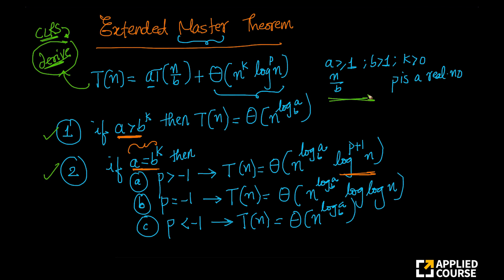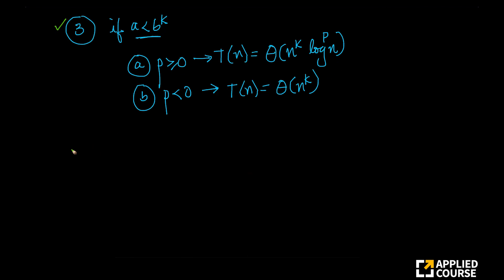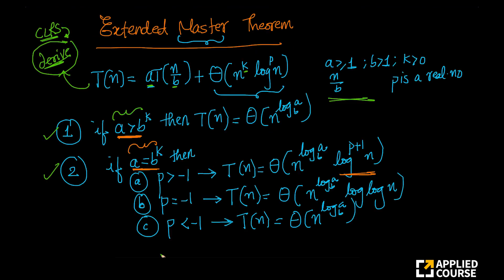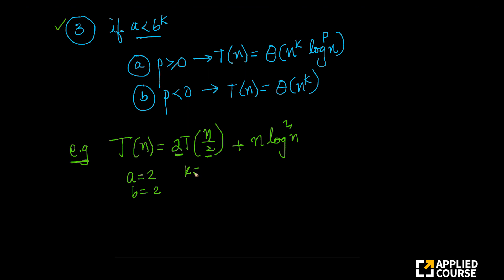Let us take an example: T(n) = 2·T(n/2) + n·log²(n). It is very important to write down what each variable is. Here a equals 2, b equals 2. My k is the exponent on n, so k equals 1, and p is the exponent on log, so p equals 2.